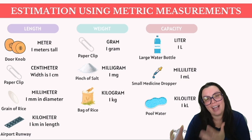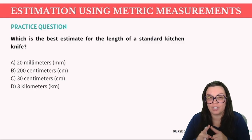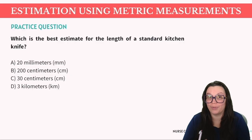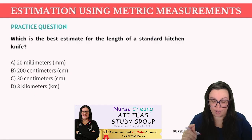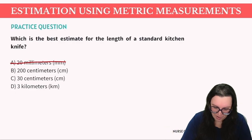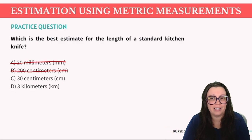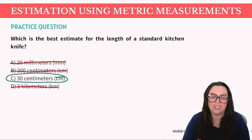Let's take a look at some examples of how this will be tested on the TEAS. Question one: what is the best estimate for the length of a standard kitchen knife? Is it A, 20 millimeters; B, 200 centimeters; C, 30 centimeters; or D, three kilometers? A standard kitchen knife is not going to be as small as 20 millimeters — that's the diameter of a grain of salt — so we eliminate A. It's definitely not 200 centimeters — that's 200 paper clip widths — and three kilometers would be three airport runways. So C, 30 centimeters, is the most correct answer.